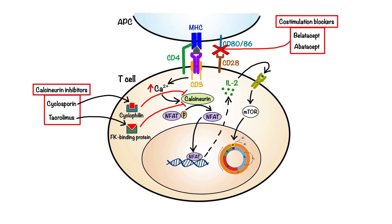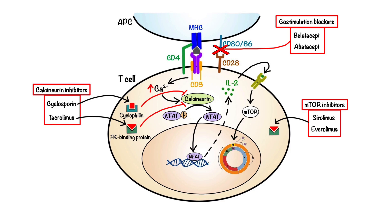Moving on to our third group: mTOR inhibitors. Drugs in this group include sirolimus, also known as rapamycin, and everolimus, which work by binding to the same intracellular FK binding protein as tacrolimus. However, instead of forming a complex with calcineurin, sirolimus and everolimus subsequently bind to mTOR, thereby inhibiting its activity. This ultimately leads to slowing or arrest of cell cycle progression, as well as inhibition of the cellular response to interleukin-2.